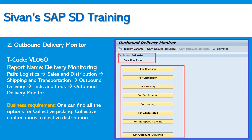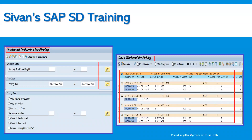When we click on one of those options, based on the input criteria, the system will fetch the outbound deliveries which are relevant for picking, confirmation, loading, or goods issue. That means all outbound deliveries already created in the system that are parked for picking, packing, or PGI can be seen here. You can see the screenshot showing outbound deliveries for picking. We can give a date range and, if we know the shipping point, we can provide that too. In real time we often don't know the shipping point, so we can execute the transaction with just a date range and the outbound deliveries will be fetched on the output screen.